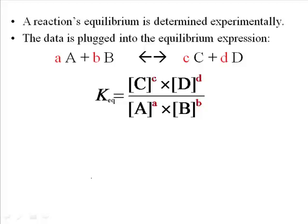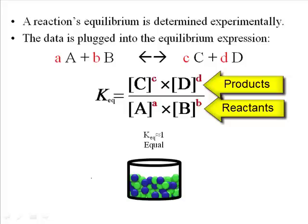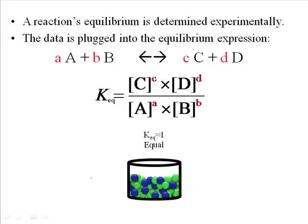Think about it this way. Let's say you mixed A and B together in a beaker, set it aside, went and had a cup of coffee, went home for the day, came back, and measured how much A is left, how much B is left, and how much C and D you've made. If you had roughly equal amounts of C, D, A, and B — maybe you made about half the products and still have about half the reactants — we would expect that if the products and the reactants are about the same, you'd basically have a Keq value of about 1.